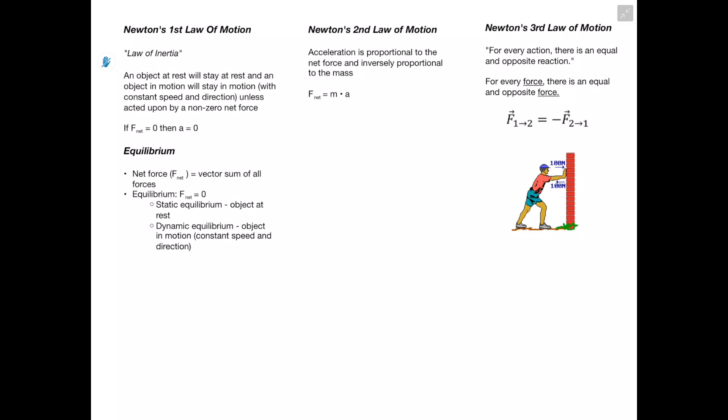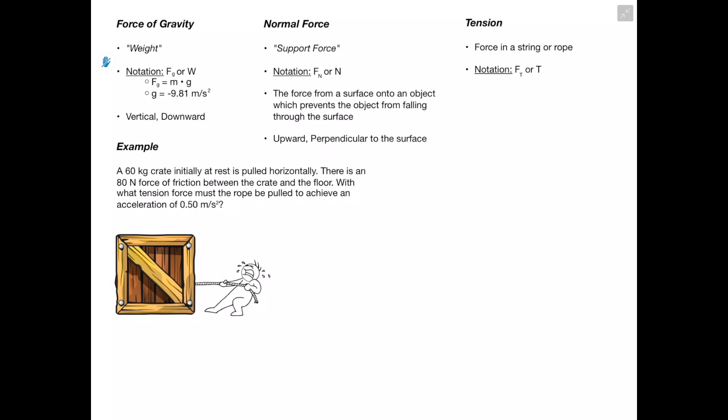Newton's Third Law states that for every action there is an equal and opposite reaction. For forces specifically: for every force there is an equal and opposite force. For example, the force of object 1 on object 2 equals the opposite force of object 2 on object 1. If you push on a wall with 100 Newtons, the wall pushes back with 100 Newtons — which is why we don't fall through it.